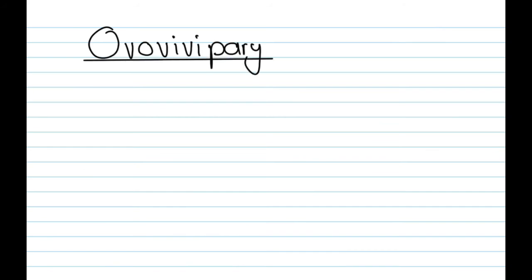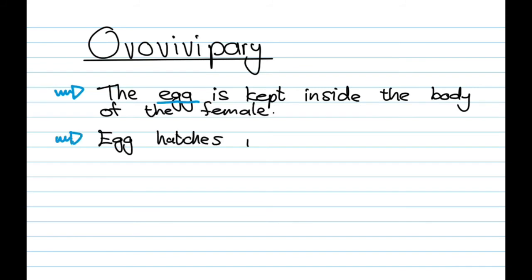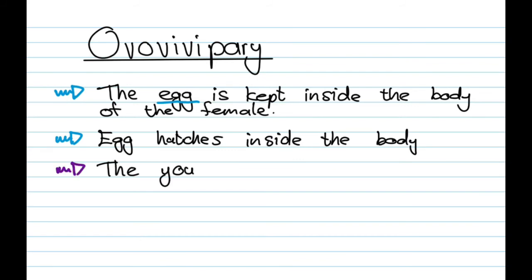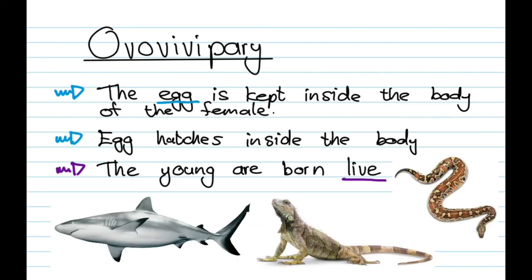Ovovivipary is the complicated one, because it has two of those word parts — egg and live birth. The egg is kept inside the body of the female, which means it's not laid immediately. When the egg is ready to hatch, it will hatch still inside the body of the female, and then the young are born live. Examples include sharks and certain types of reptiles.